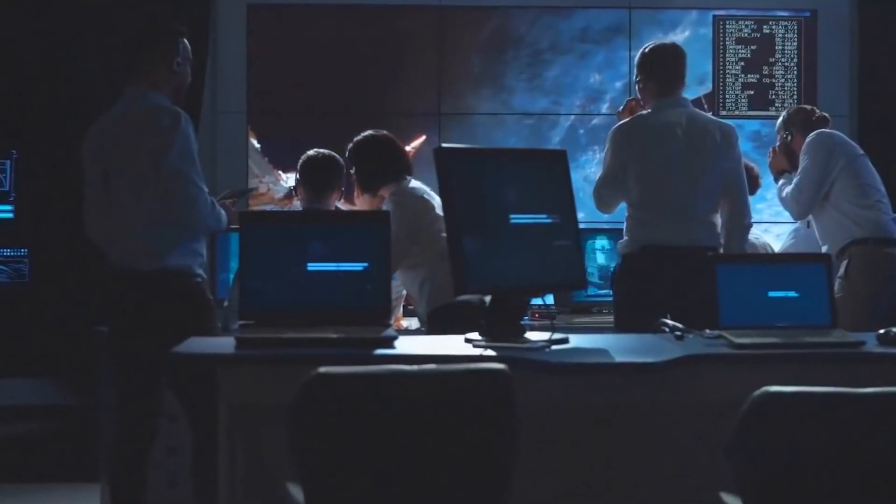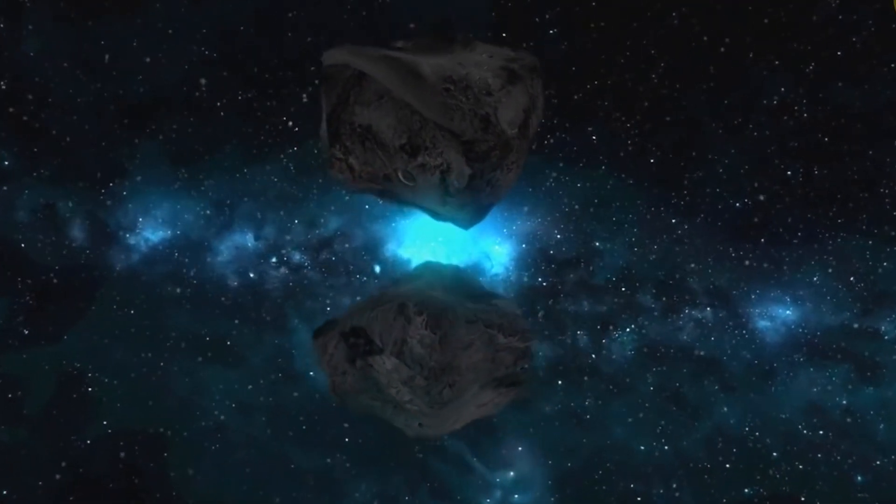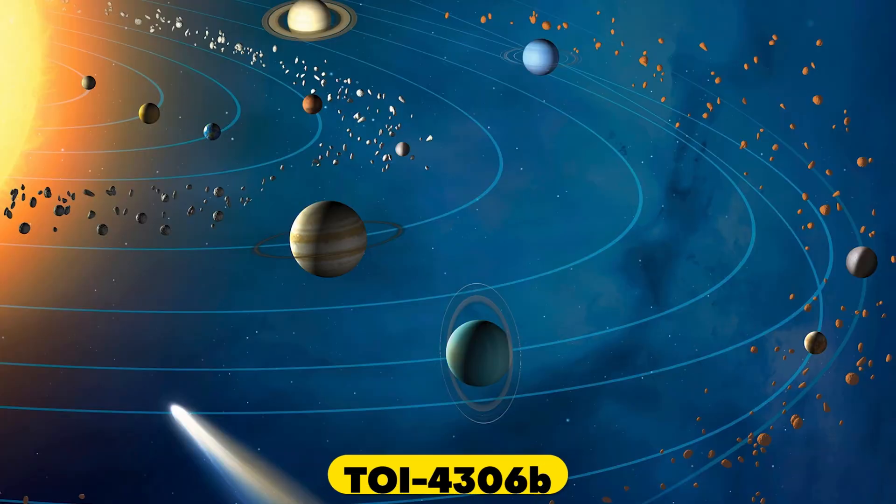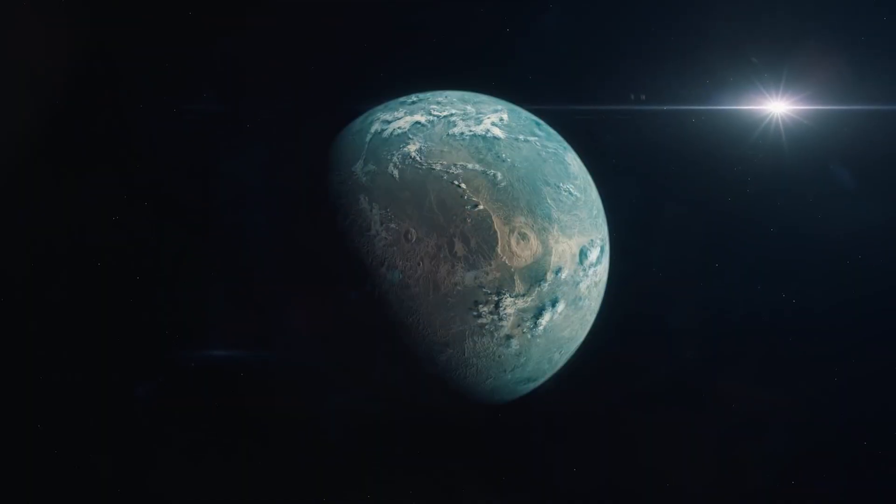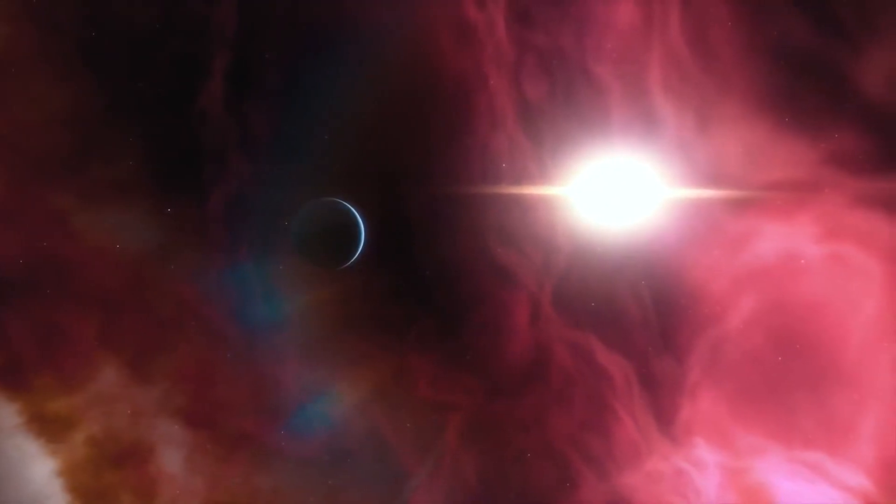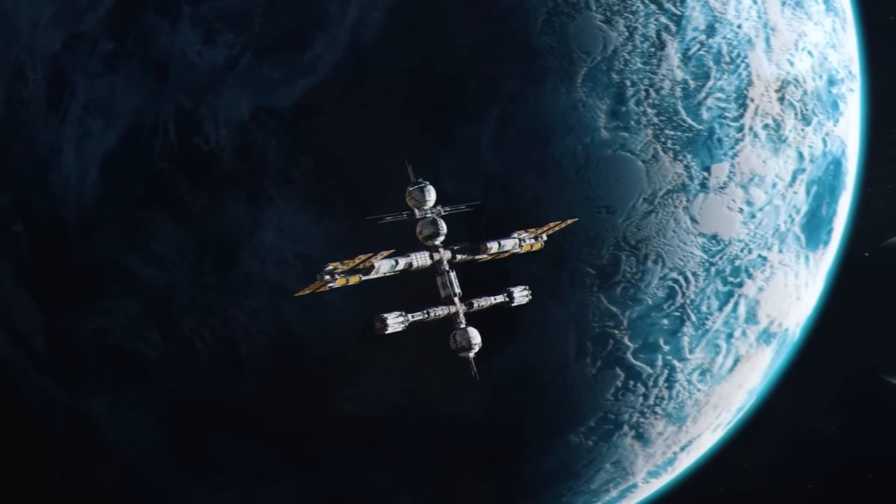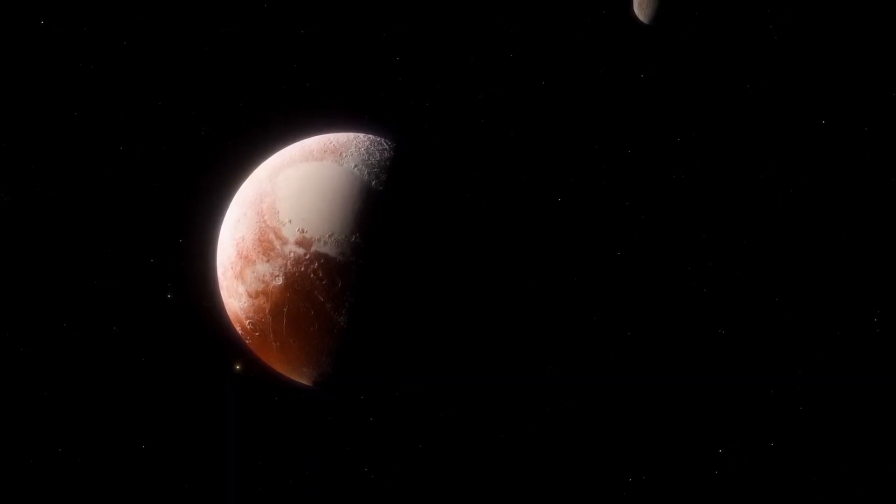According to a university news release, the first planet, LP 899-B, or TOI 4306-B, was first captured by NASA's satellite and was later confirmed to be an exoplanet by Speculoos. It is about 30% larger than our planet, with a radius of more than 5,200 miles, and orbits its sun in just 2.7 days.